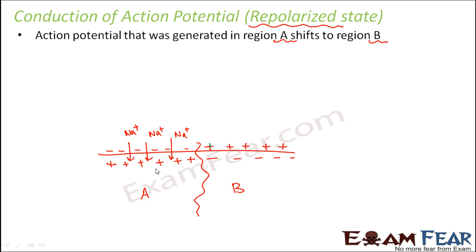Now we have to see how this action potential moves from region A to region B. If you compare the inner surface of region A with the inner surface of region B, you see that a gradient has developed. On one side there is positive charge and on the other side there is negative charge. So there will be a current flow from region A to region B because of this gradient which has developed.